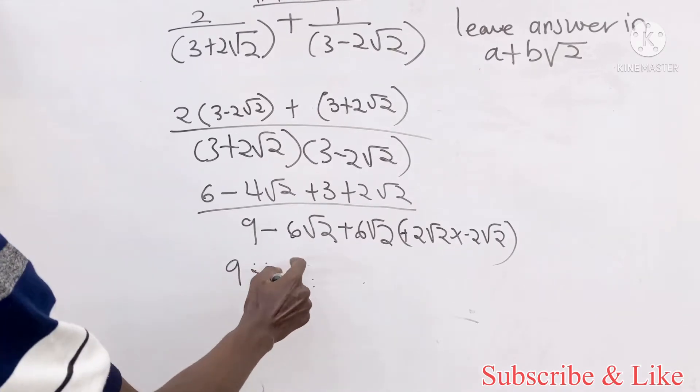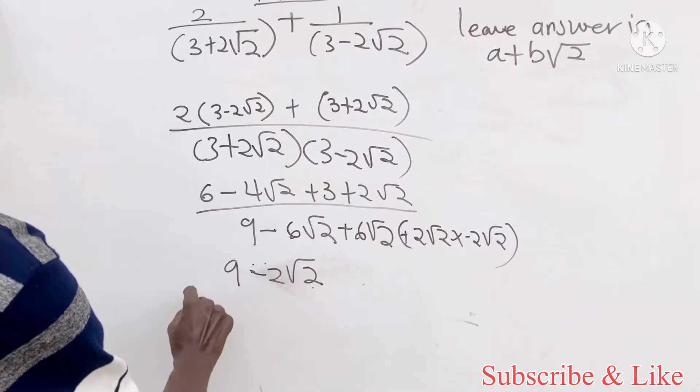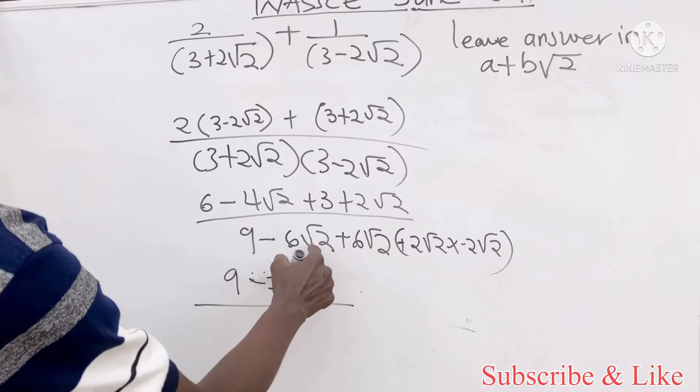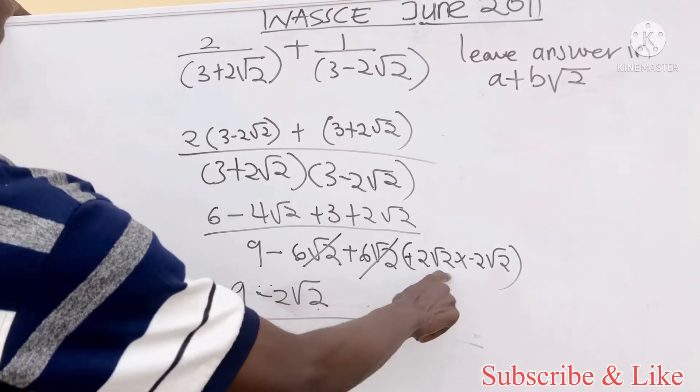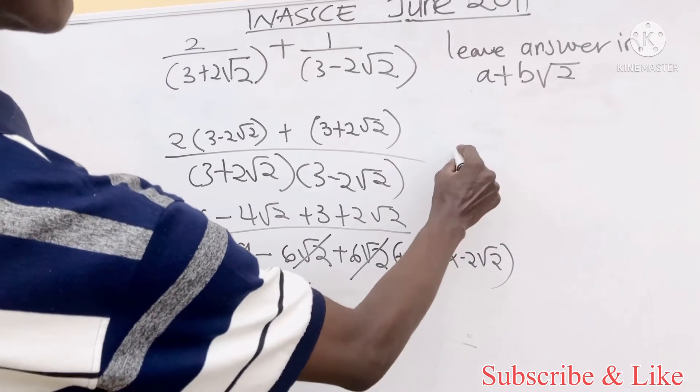Minus two root two, which is the same as minus four plus two, which is minus two root two all over. Now this would cancel this.